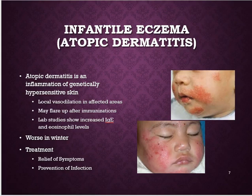Infantile eczema, also known as atopic dermatitis, often has an allergic nature. In pediatrics we refer to the asthma-eczema-allergy triad because you'll see those three conditions together frequently. It involves a hypersensitivity response — it can happen anywhere on the body but is often seen on the face and chest. Lab work will show elevated eosinophils, confirming it's an allergic response. It can happen in adults as well as children, but it's more commonly associated with childhood.